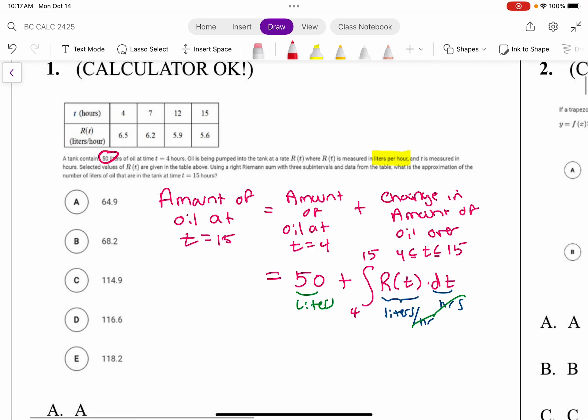So this is going to be 50 plus a right Riemann sum. That's just the area of three rectangles in which we're using the right hand side of the interval to determine the height.